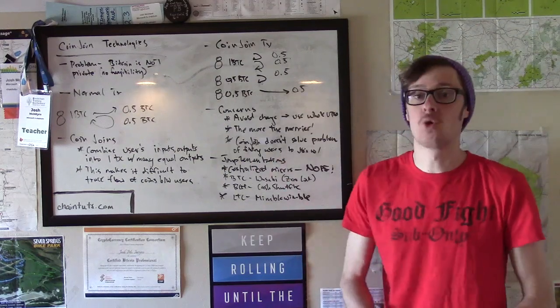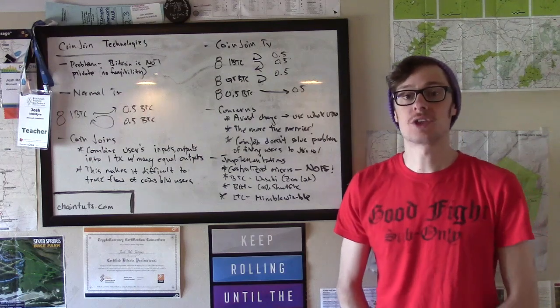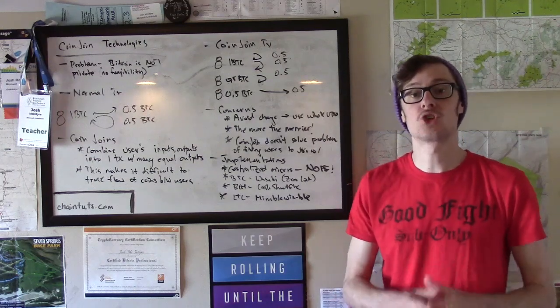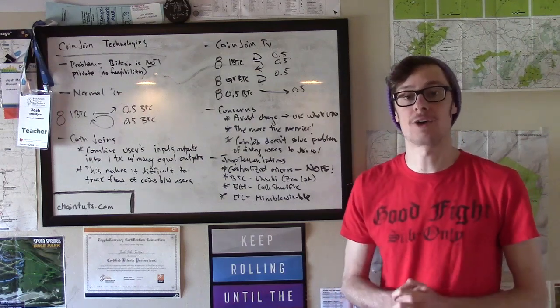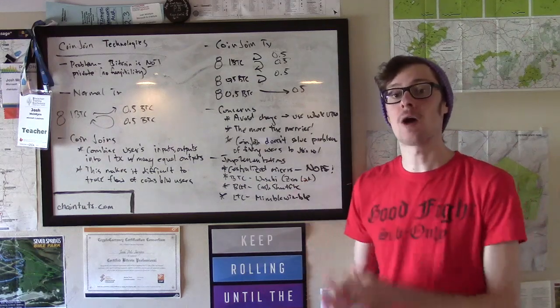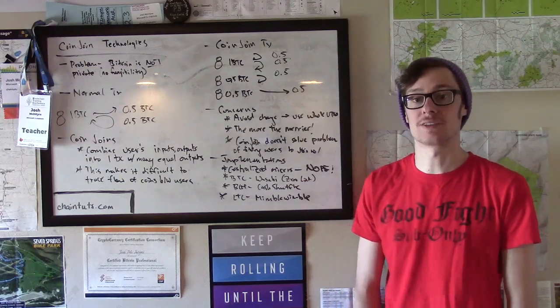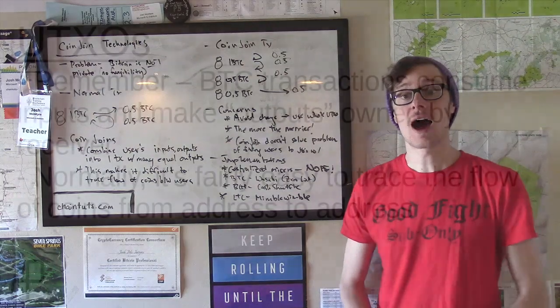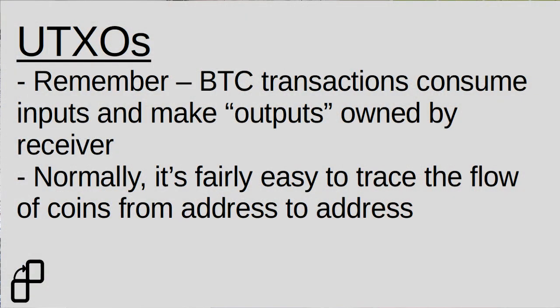With a normal Bitcoin transaction, there's a flow of UTXO inputs that are consumed by that transaction and then new outputs owned by the receiving addresses that are created. I just released my last tutorial which discusses UTXOs in depth. If you're not familiar with this concept that's important to understanding CoinJoins, check out that tutorial first and come back to this one.